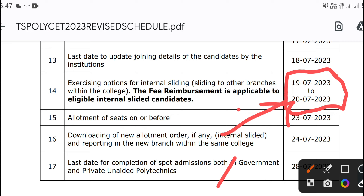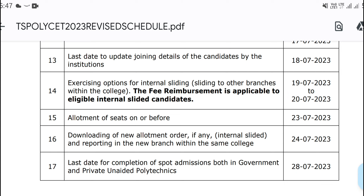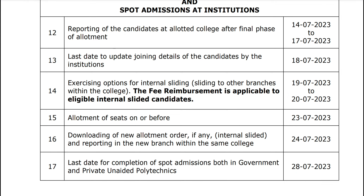If you have the first eligibility, then fee reimbursement is also eligible. And then, with the internal sliding, the branch is changing in that college.